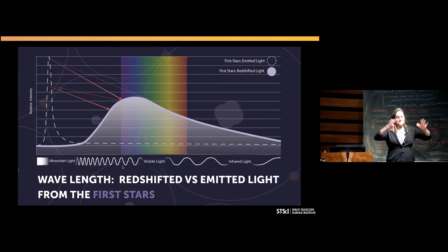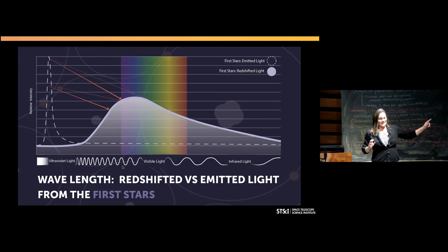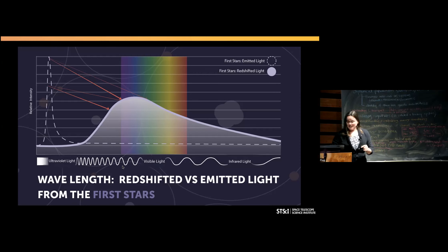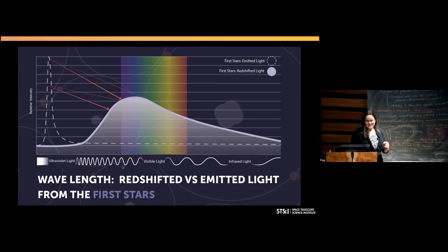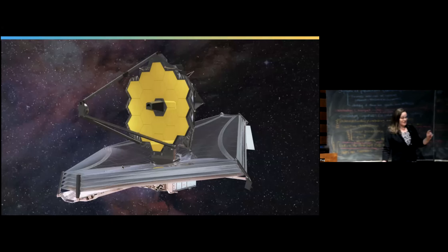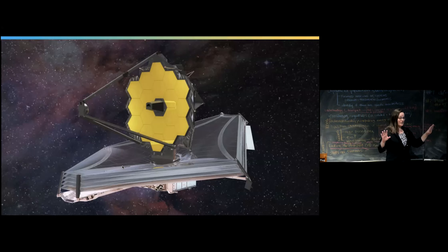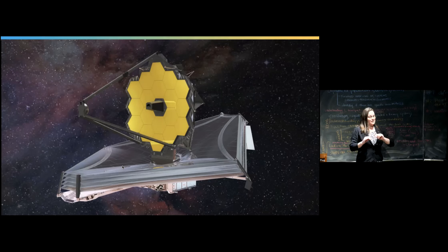We not only need a big telescope that can see really dim galaxies far away — we also need a telescope that's sensitive to very red light, even redder than your eye can see, called infrared light. With that in mind, NASA, the Canadian Space Agency, and the European Space Agency got together and built the James Webb Space Telescope: a six-and-a-half-meter telescope flying in space with huge sun shields to keep it incredibly cold, sensitive to infrared light, able to see the very beginning of the universe when the first stars and galaxies formed.